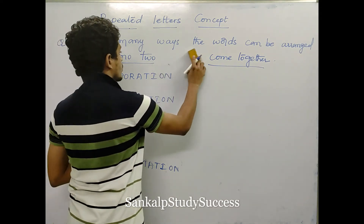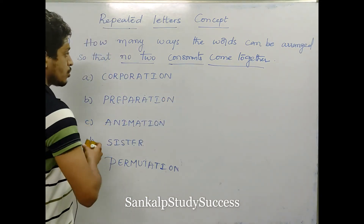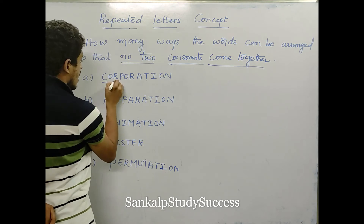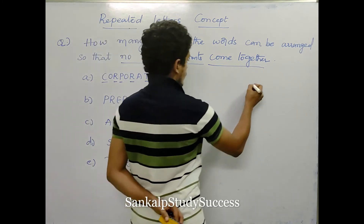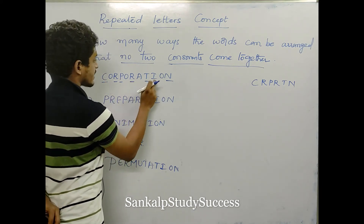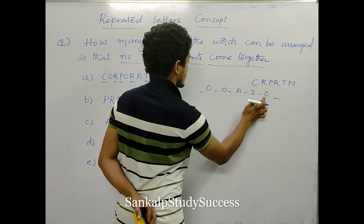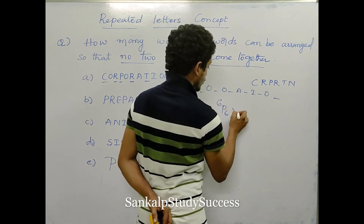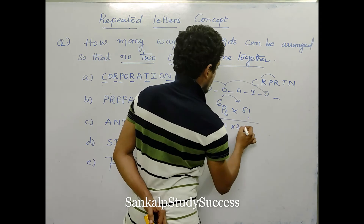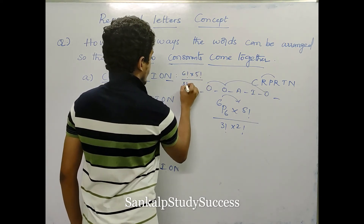Look at corporation: no two consonants come together. The consonants are C, R, P, R, T, N — six consonants. The vowels are O, O, A, I, O — five vowels giving six places. So we arrange 6 consonants in 6 places: 6P6. Into 5 factorial for vowel arrangements, divided by repetitions: O repeats 3 times giving 3 factorial, and R repeats 2 times giving 2 factorial. Answer: 6 factorial into 5 factorial divided by 3 factorial into 2 factorial.